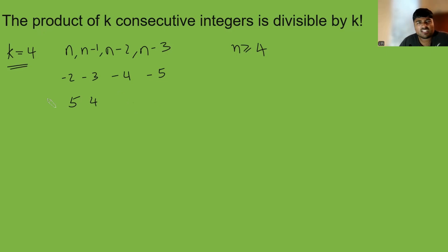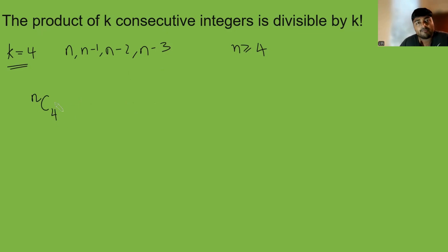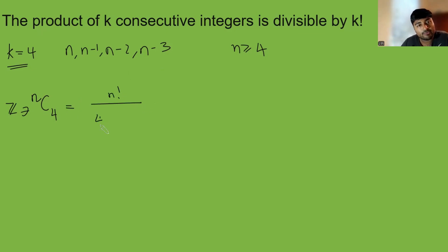So we can assume n is at least 4, and what we're going to do is simply consider n choose 4. n choose 4 we know is an integer — a non-negative integer. And n choose 4 is n factorial divided by 4 factorial times n minus 4 factorial.